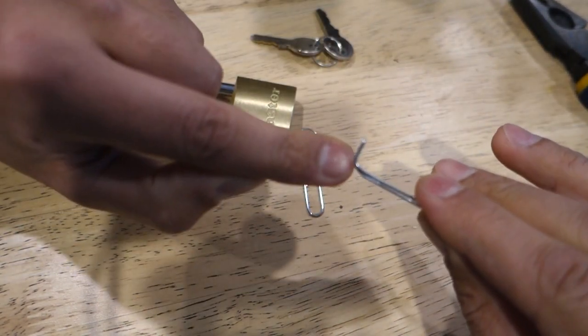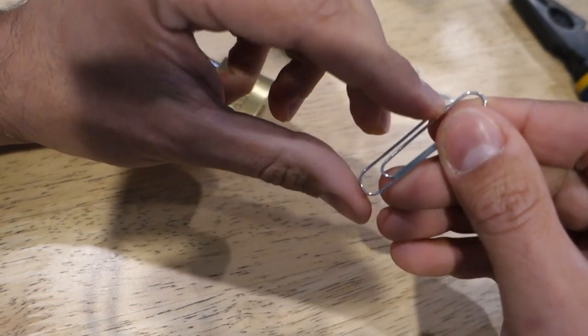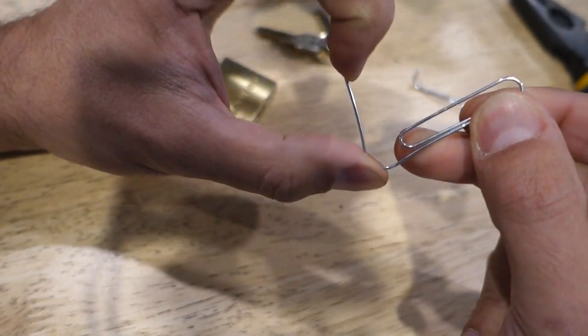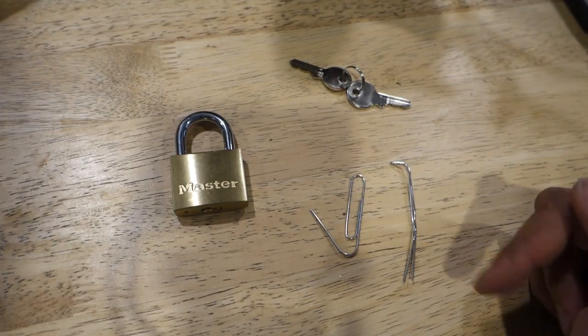Now that that's done, we've created our little tensioner tool. Next thing we're going to do is create our lock picking tool, and to do that all we're going to do is simply bend this section here out on about a 45 degree angle. So now we've got our lock picking tools ready to go.